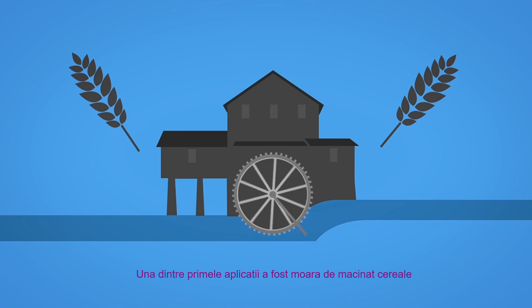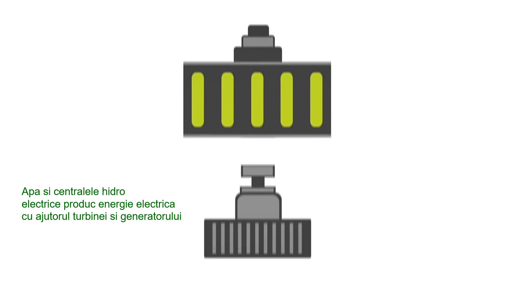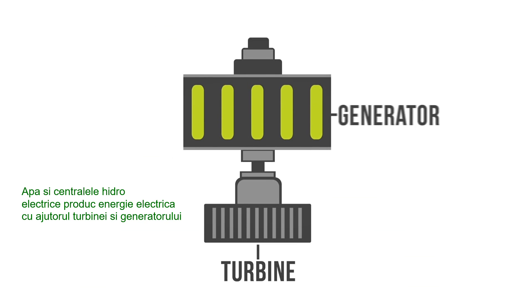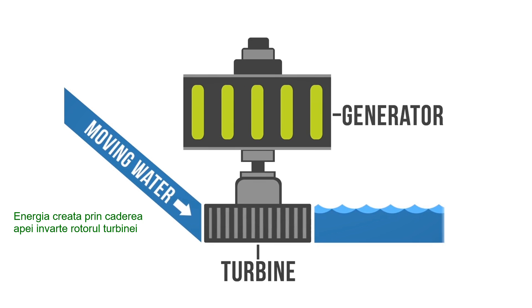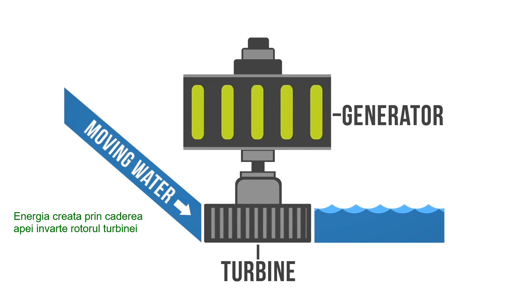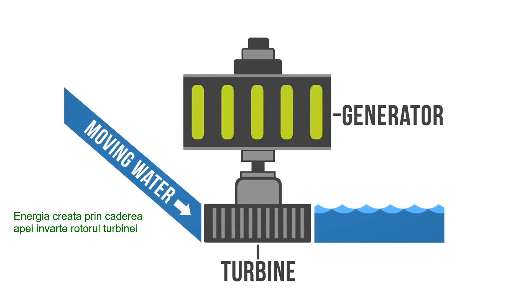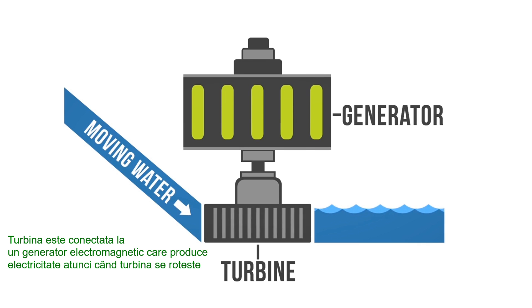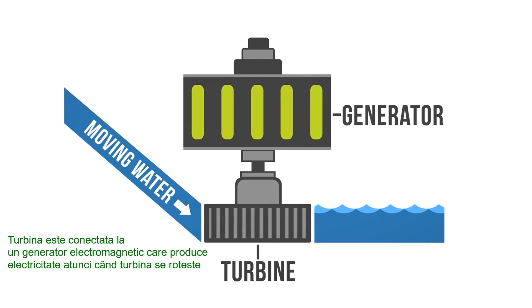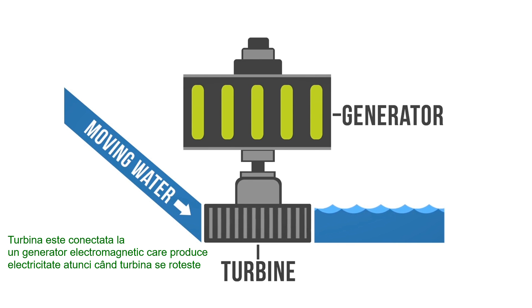But today, modern hydro plants produce electricity using turbines and generators. The mechanical energy created by moving water spins rotors on a turbine. This turbine is connected to an electromagnetic generator, which produces electricity when the turbine spins.